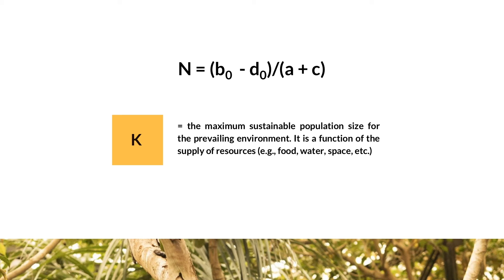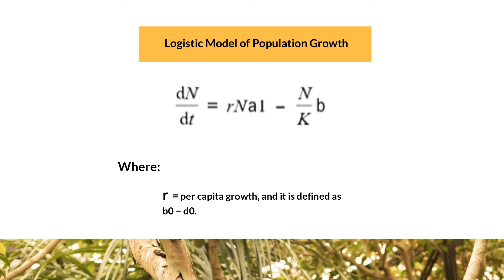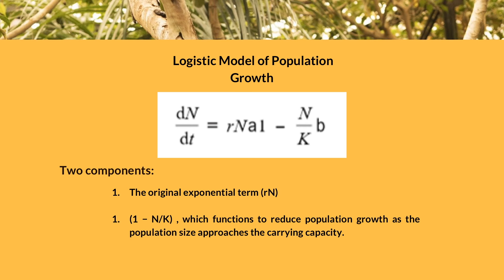It is a function of the supply of resources such as food, water, and space. We can now rewrite the equation for population growth that includes the birth and death rates that vary with population size, using the value of carrying capacity K. In this form, referred to as the logistic model of population growth, the per capita growth rate R is defined as B sub-zero minus D sub-zero, or the ideal birth rate minus the ideal death rate. The logistic model effectively has two components: the original exponential term, or the per capita growth rate times the population density, and the second term, or 1 minus the population density over the carrying capacity, which functions to reduce population growth as the population size approaches the carrying capacity.